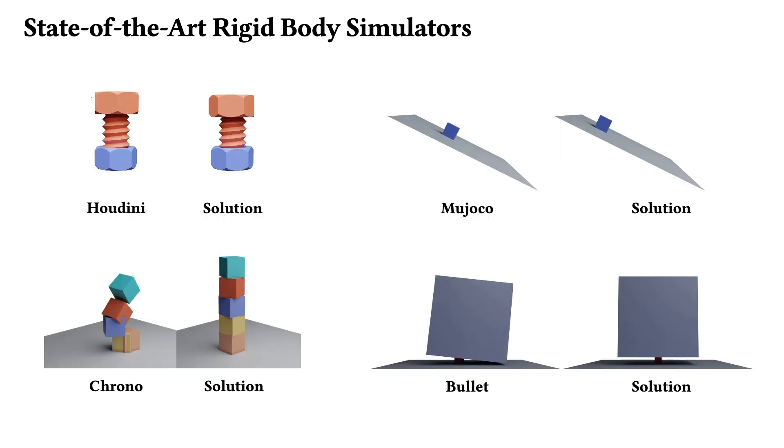But in order to achieve this performance, underlying algorithms in these methods cannot provide guarantees. This means that as parameters change and contact complexity grows, significant intersections, instabilities, and even outright failures can happen.